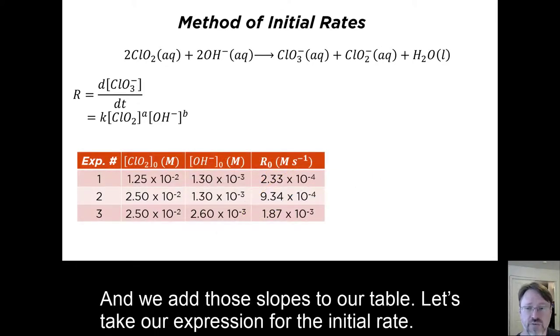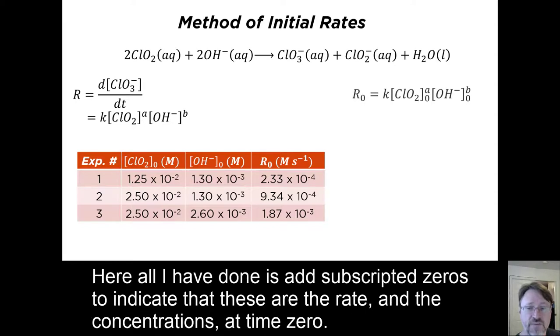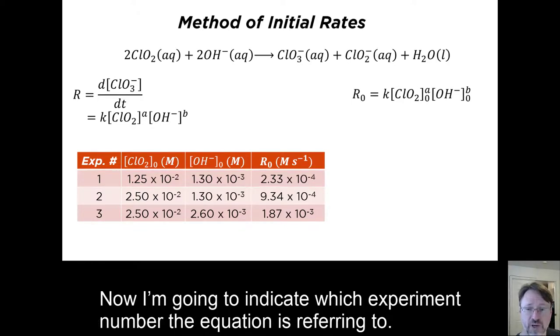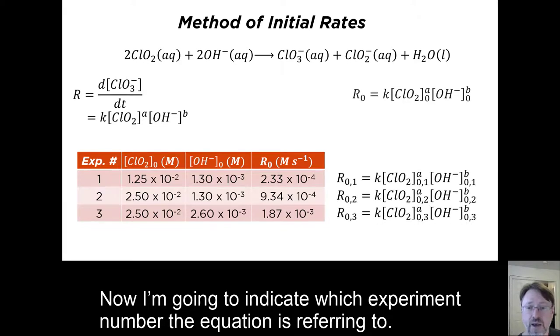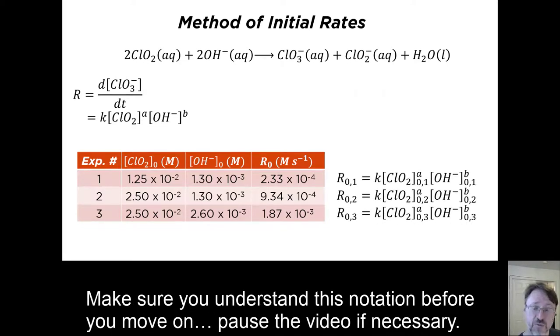Let's take our expression for the initial rate. Here all I have done is add subscripted zeros to indicate that these are the rate and the concentrations at time zero. Now I'm going to indicate which experiment number the equation is referring to. Make sure you understand this notation before you move on.